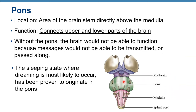The pons is located directly above the medulla. Its function is to connect the upper and lower parts of the brain — without the pons, messages from the periphery would not be transmitted to the brain. The pons also contains centers responsible for sleeping and dreaming.